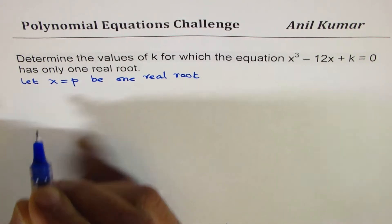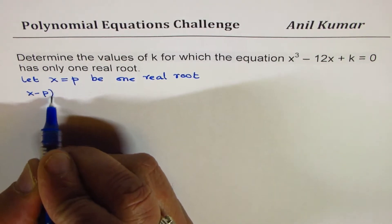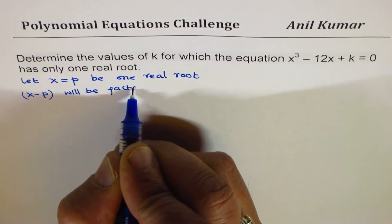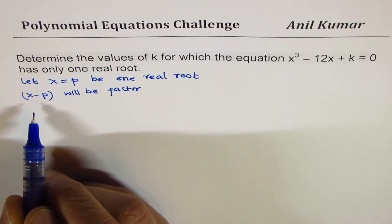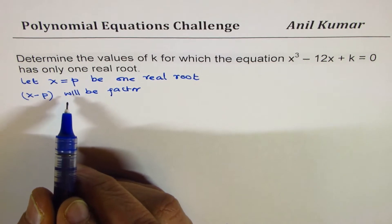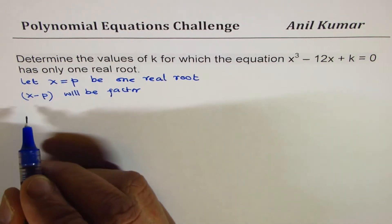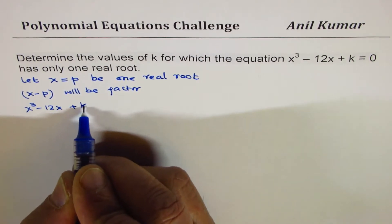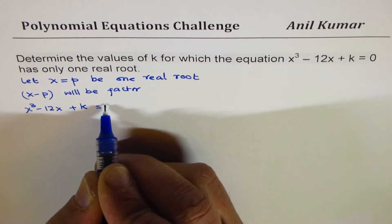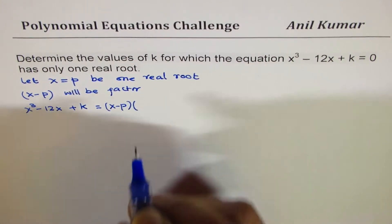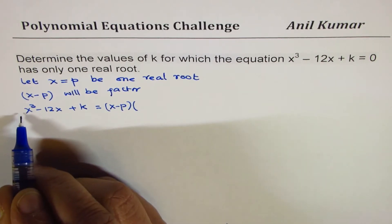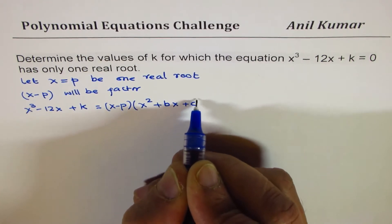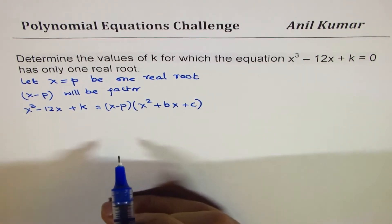That really means that (x - p) will be a factor. Now if (x - p) is a factor, then the other factor is going to be a quadratic equation. So we could write this function, x³ - 12x + k, as equal to (x - p) times a quadratic. Since the leading coefficient is 1, we can say (x² + bx + c).